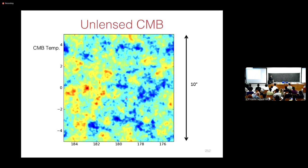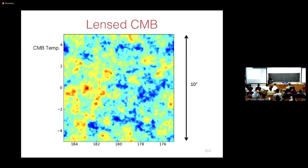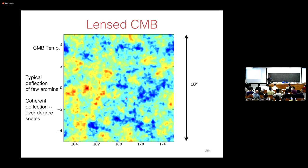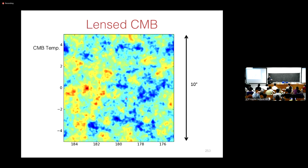The differences are small. This is why only in the last decade have experiments been good enough to really measure this effect. The CMB photons are moved by a small amount — just a few arcminutes. But what you might notice is that the deflections are not completely independent — big degree-scale blobs are moved around together. The deflections are small but coherent over much larger scales, over degree scales.